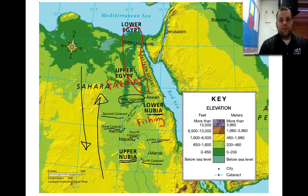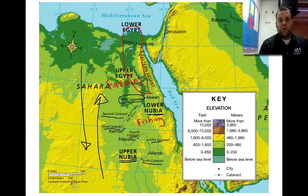Another thing to notice is the changes in elevation. Over here we have a light green and a darker green. The lighter green is in this area, and the darker green is down here. The darker green also represents more fertile land. The further down you go along the Nile, the lower the elevation, and the more fertile soil is deposited there — as opposed to up here in the mountains where the river cuts through.